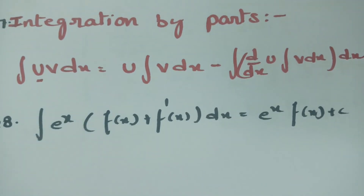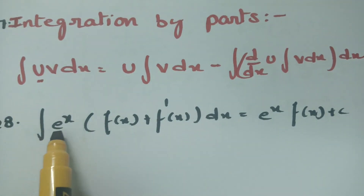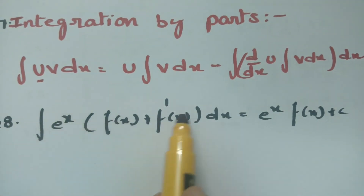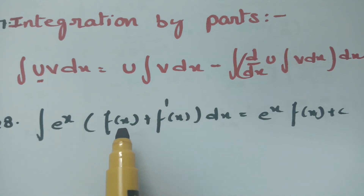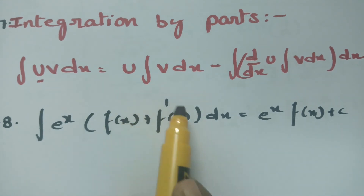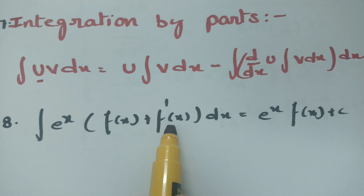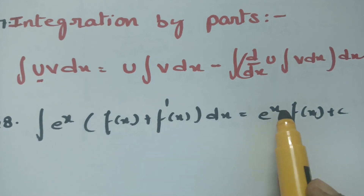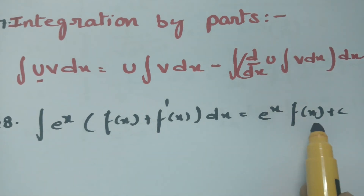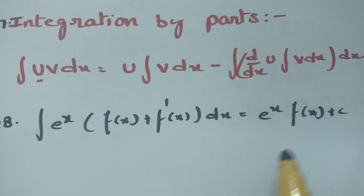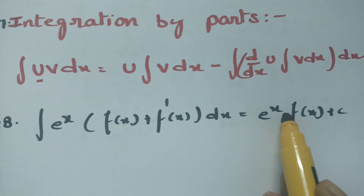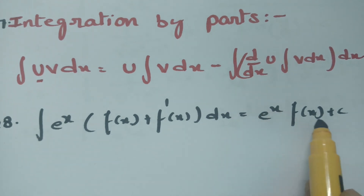The next important formula: integral of e^x · [f(x) + f'(x)] dx. If we have x² here and its derivative 2x is also present, then we can simply write the result as e^x · f(x) plus c — for example, e^x · x² plus c, straight away.